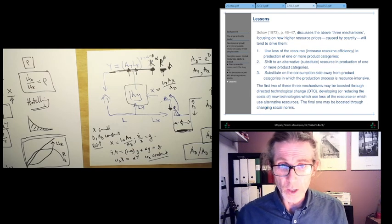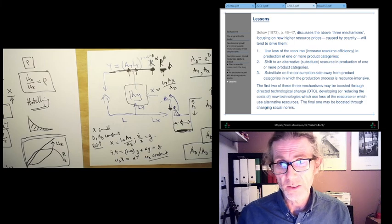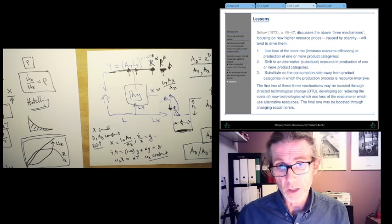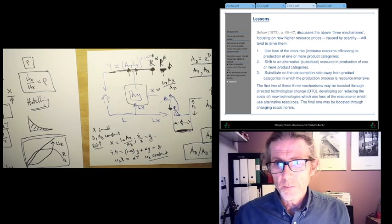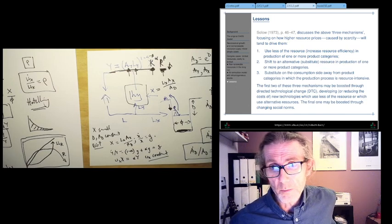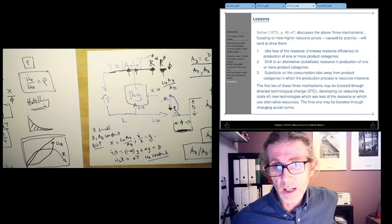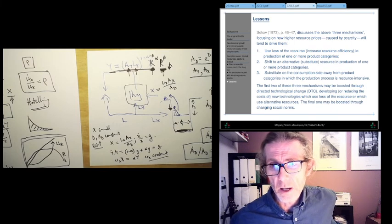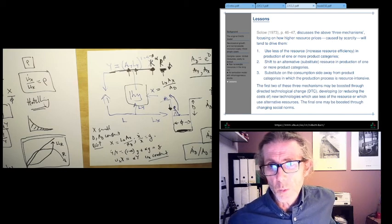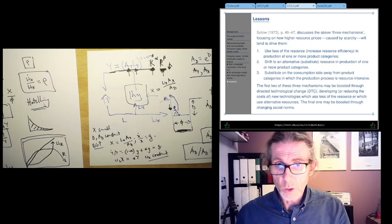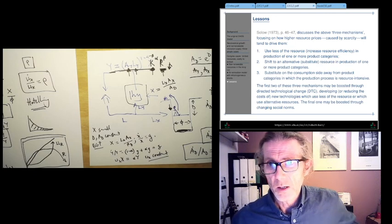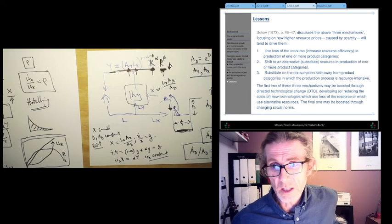Ironically, Solow, one of the S's in the DHSS, the year before he published the DHSS papers, he discusses those three mechanisms and lists them more or less in a paper that I want you to have a look at, and how they would be driven by higher resource prices. The first one: use less of the resource or increase resource efficiency. The second one: shift to substitute resources, which could be driven as well by changes in technology. The third one is all about the consumption side and social norms.